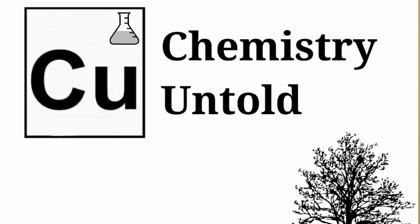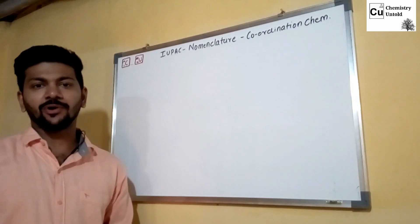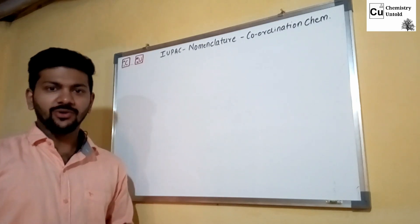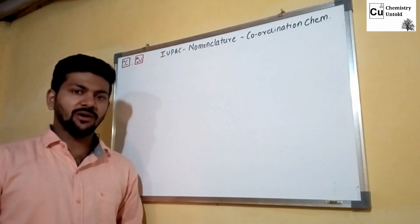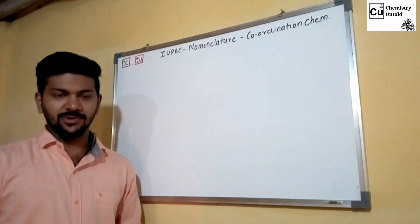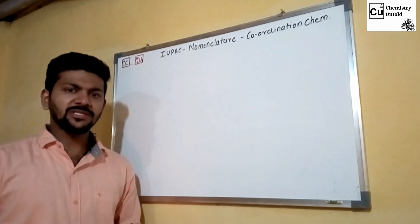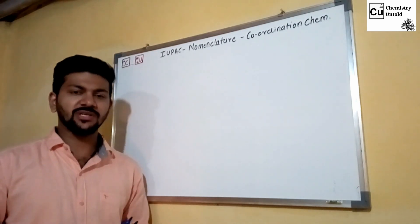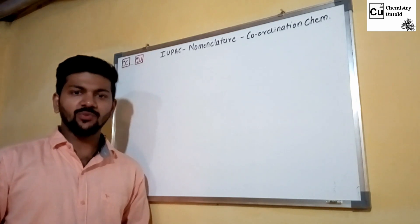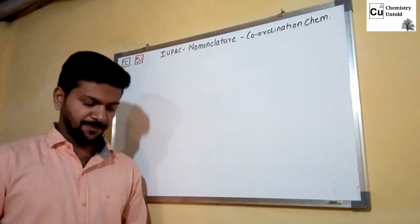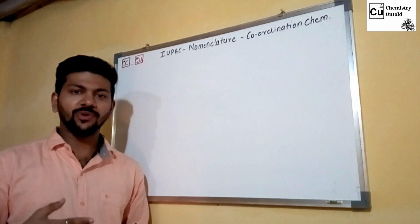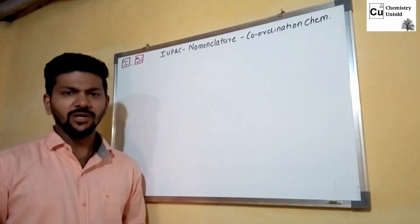Welcome to Chemistry. Today we are going to speak about something very important: coordination chemistry. We are going to learn about IUPAC nomenclature for coordination chemistry. IUPAC nomenclature refers to standard scientific names which are given to a compound and by which we recognize them. First of all, to start with IUPAC nomenclature, you should know what is meant by a complex compound.